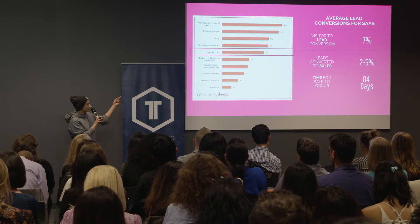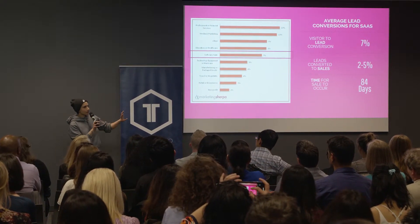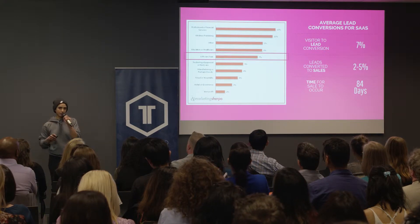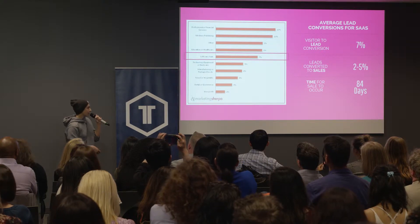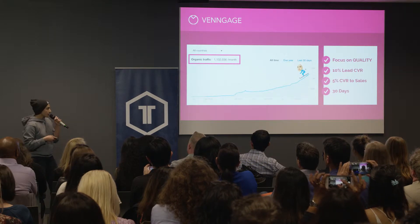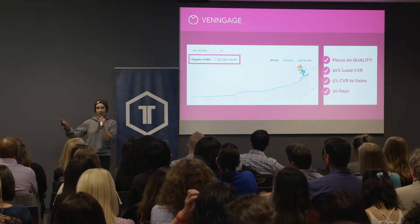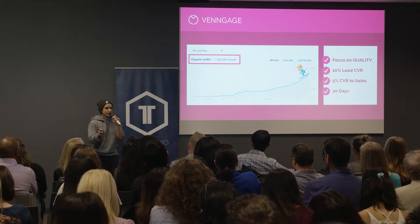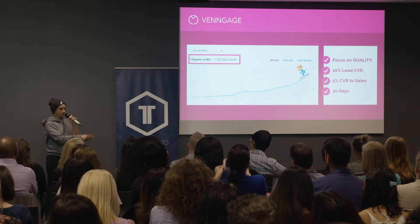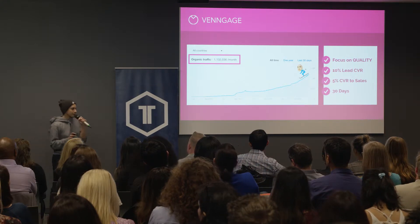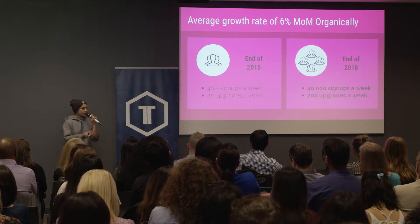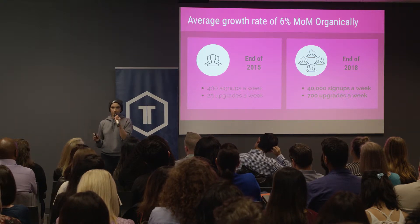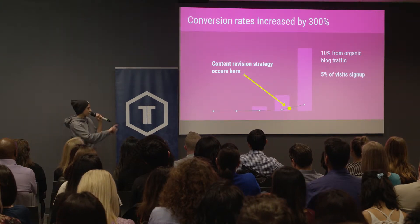According to a survey by Marketing Sherpa, about seven percent is the average visitor-to-qualified-lead conversion rate for SaaS companies. After that, about two to five percent of those leads actually convert into sales, and it typically takes about 84 days. At Venngage, we focus on quantity of traffic but don't forsake quality — we achieve a general ten percent visitor-to-lead conversion rate across the whole site, about five percent conversion to sales, and that takes about 30 days. We're driving roughly 40,000 to 45,000 signups a week — qualified leads — and roughly a thousand upgrades per week.